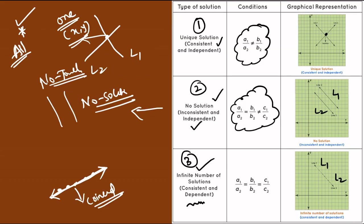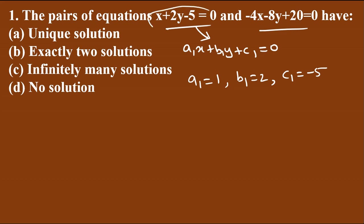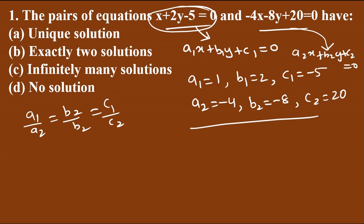Now we look at the conditions. We compare equations with the standard form a1·x + b1·y + c1 = 0 and a2·x + b2·y + c2 = 0. The key condition to check is a1/a2, b1/b2, and c1/c2. We will see how these ratios determine which case applies.